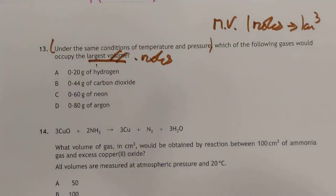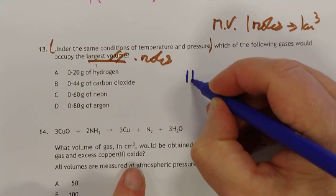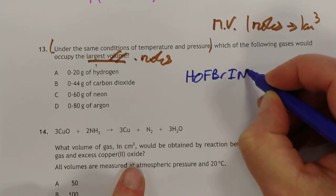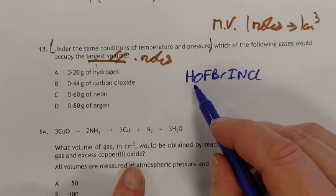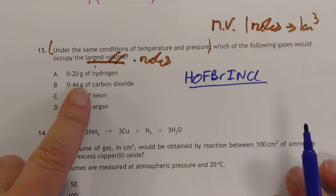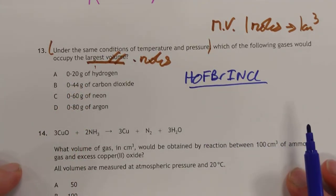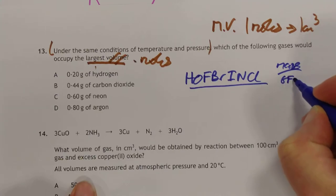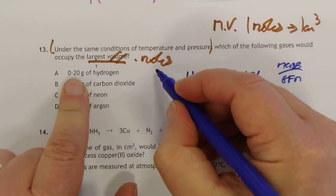You've got to be careful with the Hofbrinkels. Please watch your Hofbrinkels. These are the diatomic elements because they come about in twos. These are all masses. These are in grams. So, therefore, I'm going to turn them all into moles by simply doing mass over GFM.